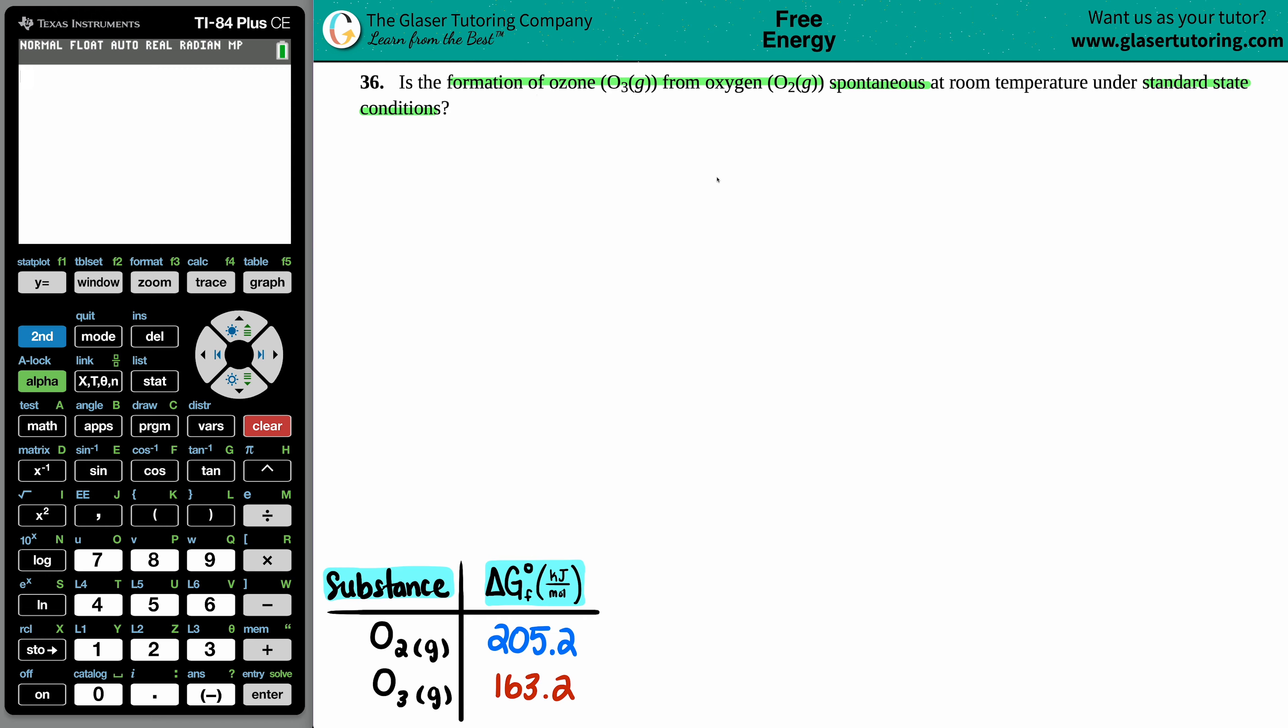If I'm forming something, I know that I have to yield and put whatever I'm trying to form on the product side. So I know that the O3 is going to go on the product side. And what am I forming? Well, I'm forming ozone from oxygen. The O2 has to go on the left.